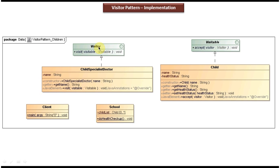Here you can see the visitor interface, which has an abstract method visit that accepts a visitable object. In this case the visitable object is child. ChildSpecialistDoctor is a concrete class that implements the visitor interface and provides an implementation of the visit method. It has one attribute, name, with a getter method. To create a ChildSpecialistDoctor object you use the constructor and pass the name of the doctor.